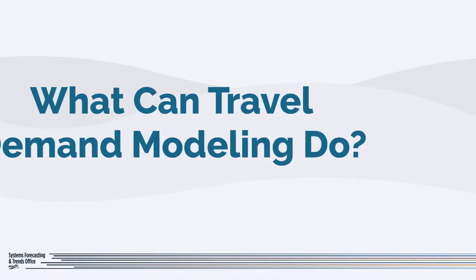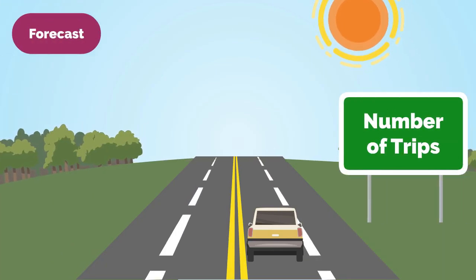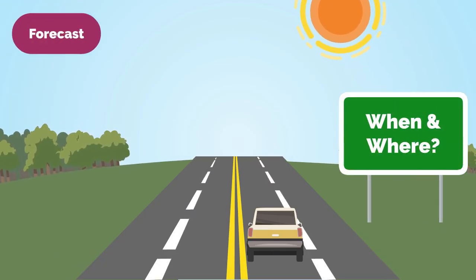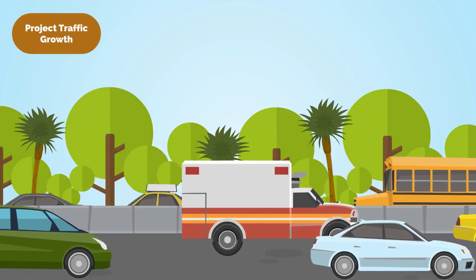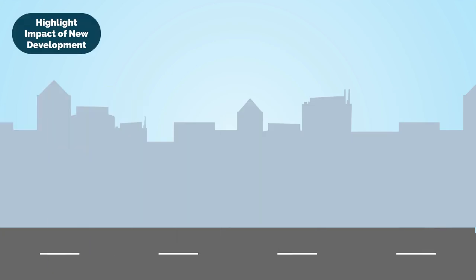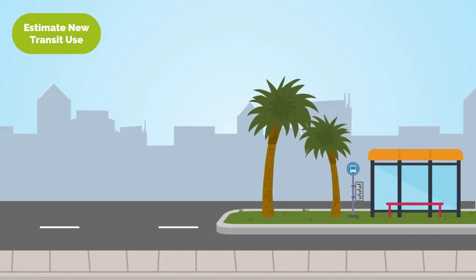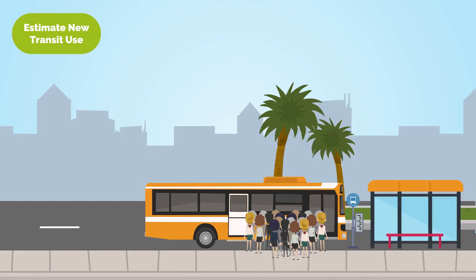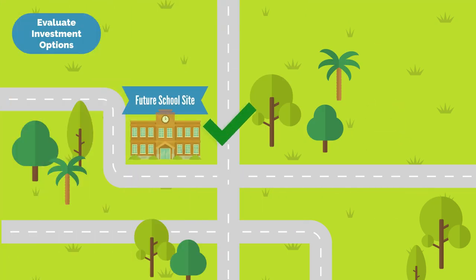FDOT's travel demand model can do a lot. It can forecast the number of trips people will take on our roads as well as when and where they will be traveling, project how traffic will grow in different areas over time, highlight the impact of new development on traffic, estimate how many people will use a new bus or train service, and evaluate different transportation investment options to see which works best to support future needs.